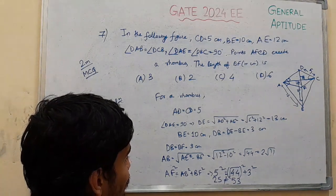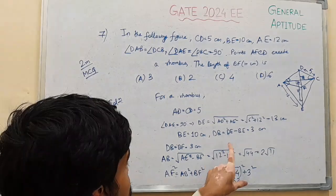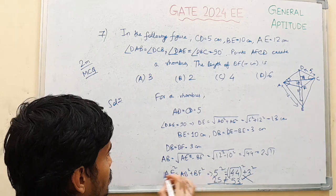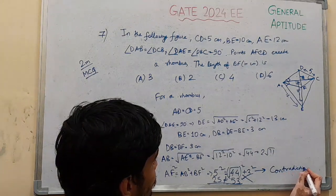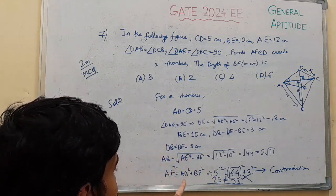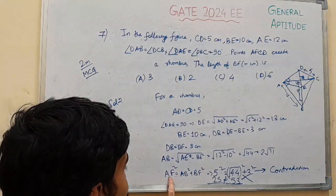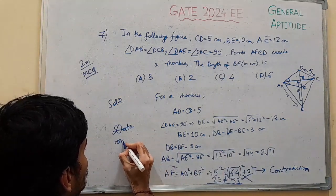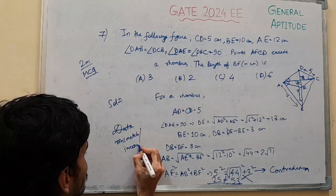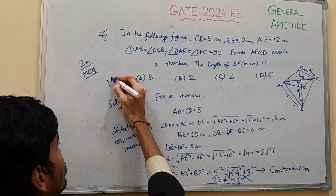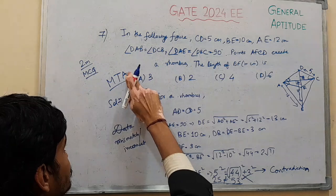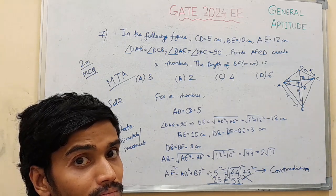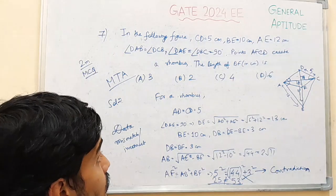So 25 and 53 are equal? No. But according to the Pythagorean theorem, AF square should be equal to AB square plus BF square, but it is not. So it is a contradiction. This is a contradiction.